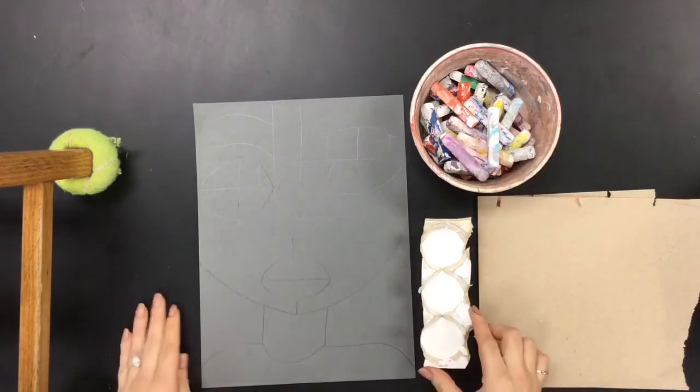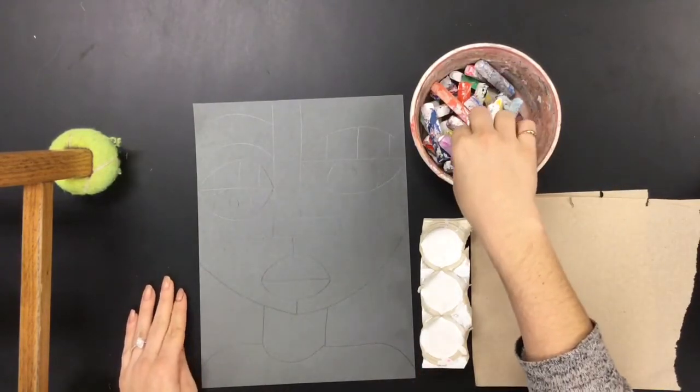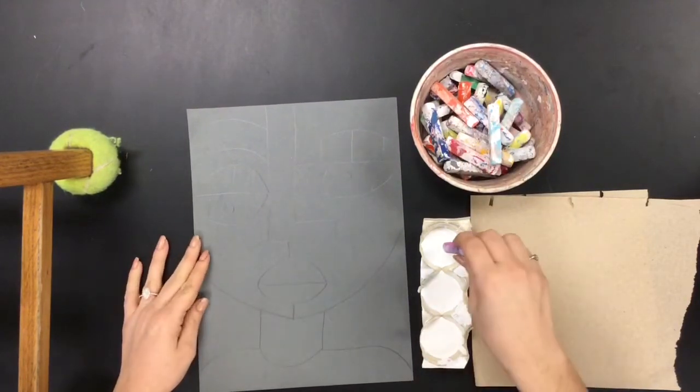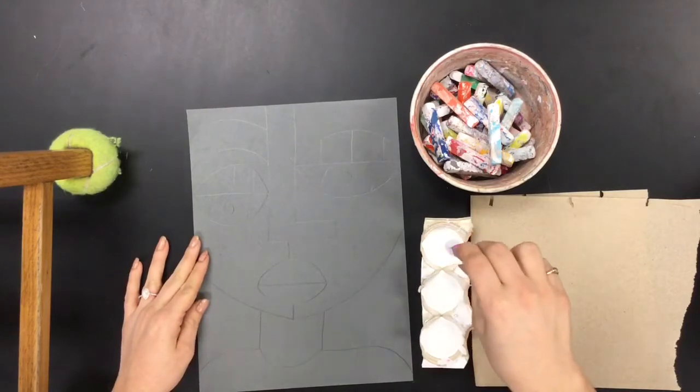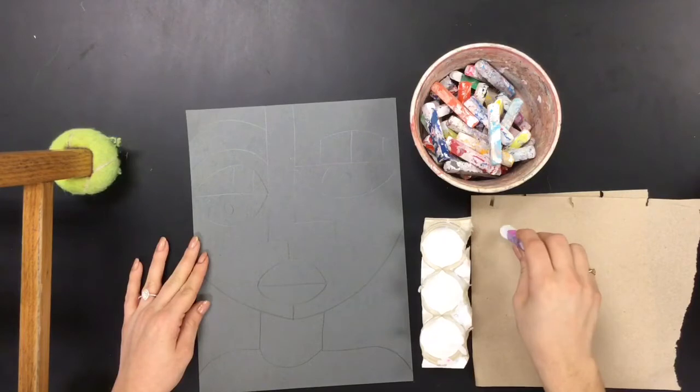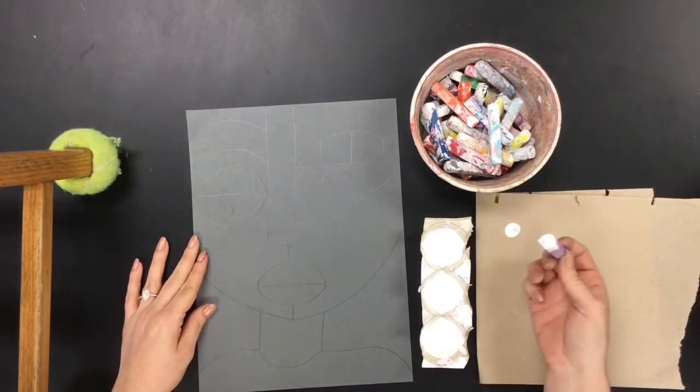What I have here are my chalk pastels, my white tempera paint, and a paper towel. What I'm going to do is I'm going to start with one color chalk pastel and I'm going to dip the tip into the white paint. Oh my! I seem to have gotten way too much paint, so I'm just going to dab a little bit off on my paper towel.